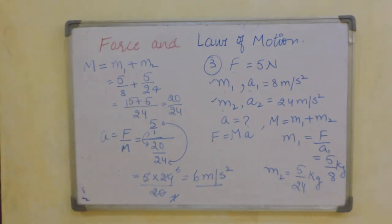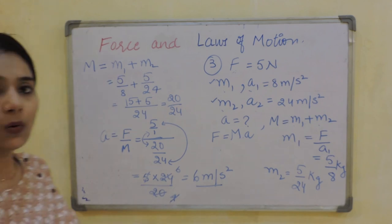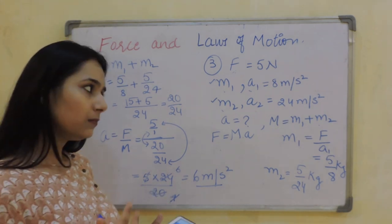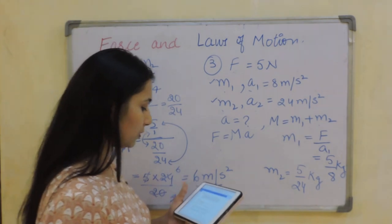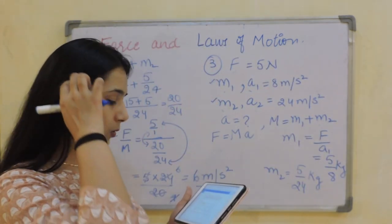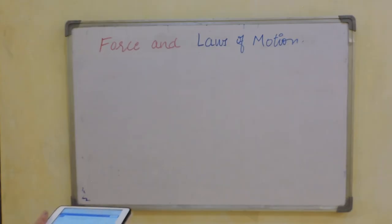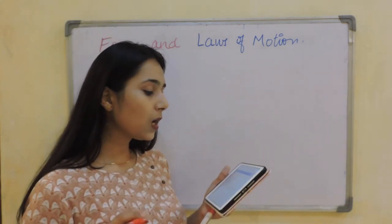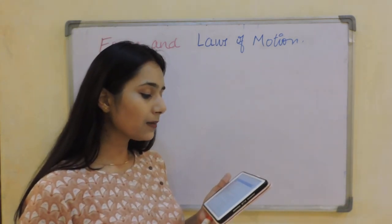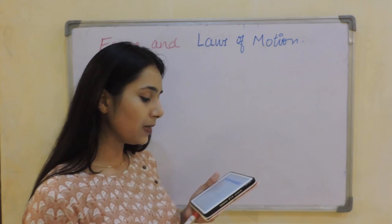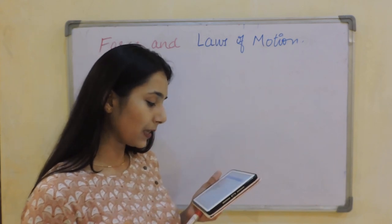I hope this is clear to you. If you have any doubt you can let me know in the comment section. Now let's continue to the next question. Calculate the force required to impart to a car a velocity of 30 m/s in 10 seconds. The mass of the car is 1500 kg.